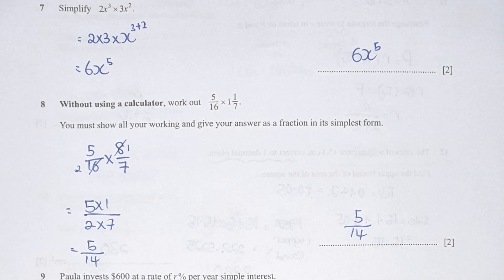Question 7, so things to take note is remember to multiply the numbers together, then you arrange the unknown accordingly. So 2 times 3 is 6, then x to the power of 3 plus 2 is 5.